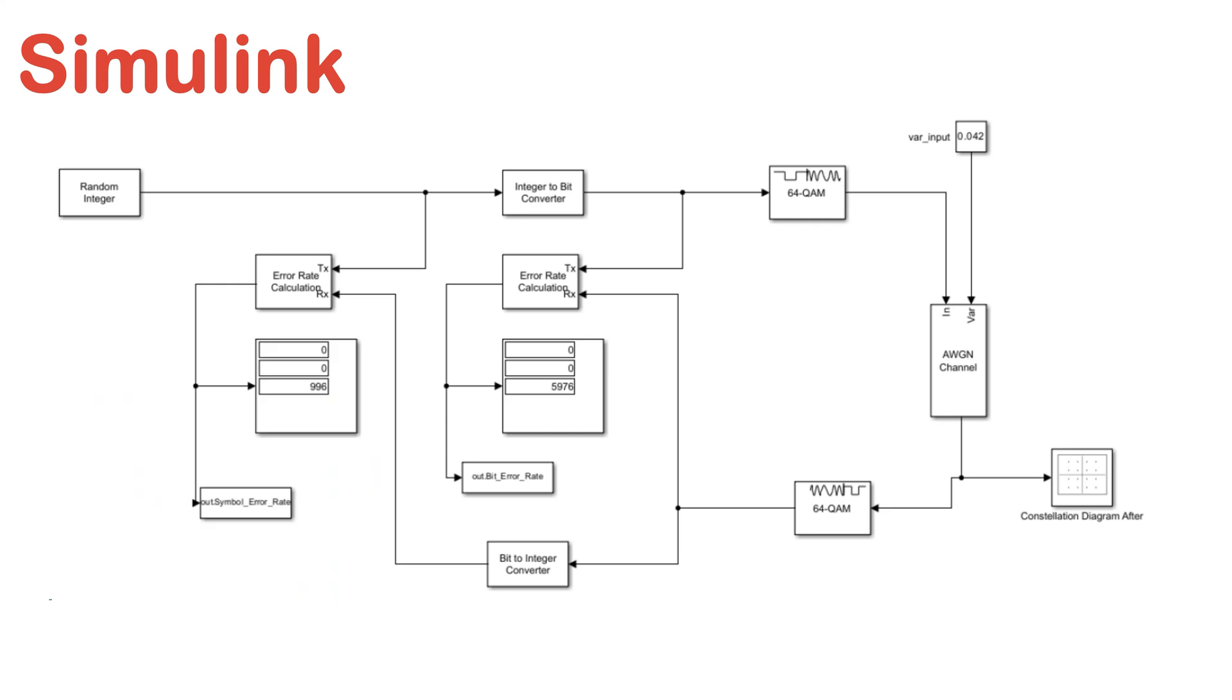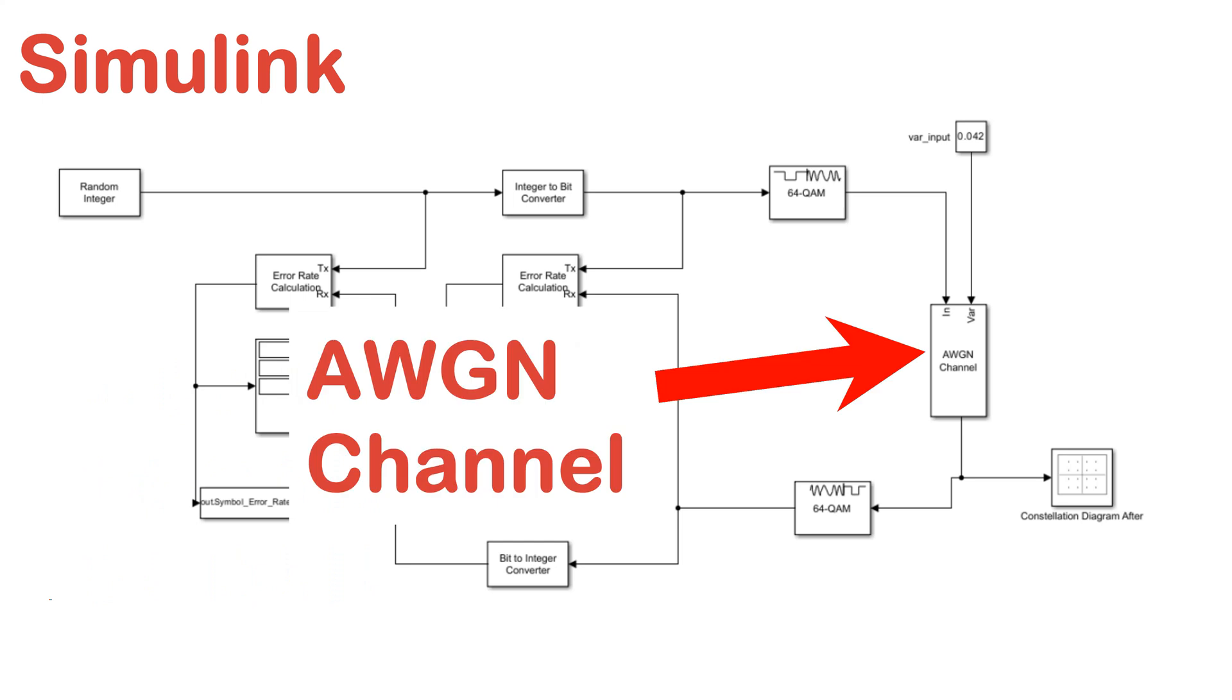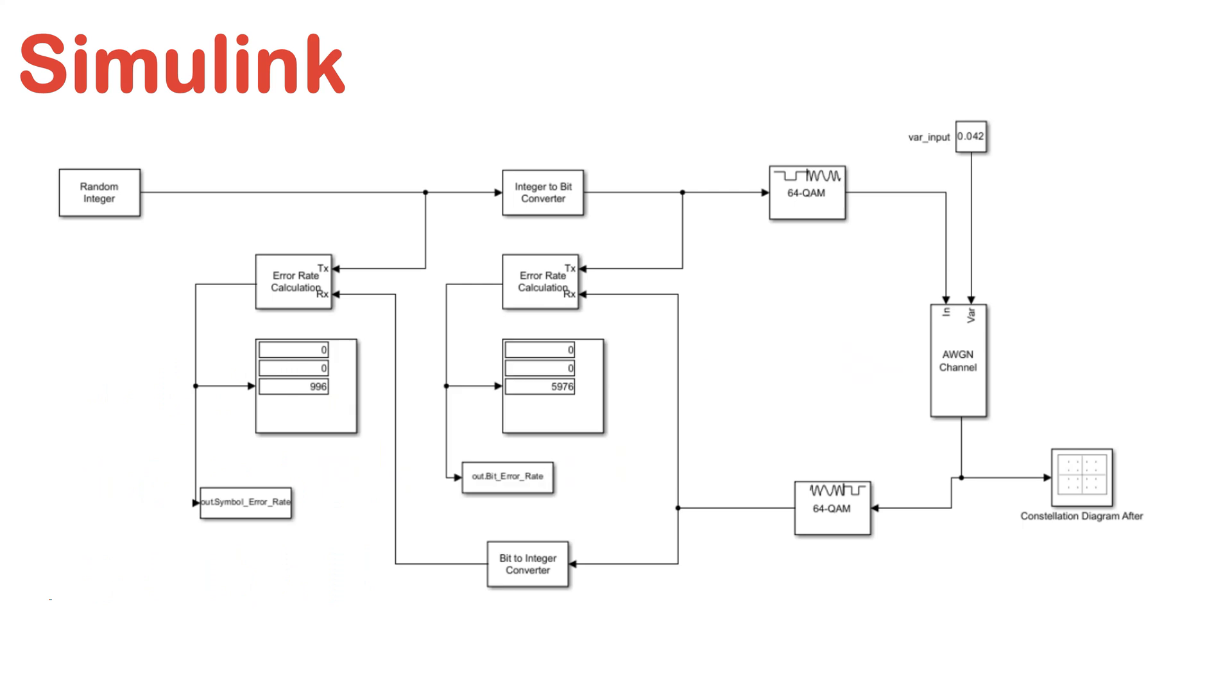The modulated data is then passed through a noisy channel represented by the AWGN channel block. The noise level in the channel is controlled by the signal-to-noise ratio (SNR), which will be adjusted during the simulation. A block is also connected to the AWGN channel and updated using MATLAB code. This block represents the variance of the noise.